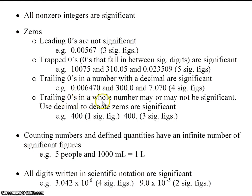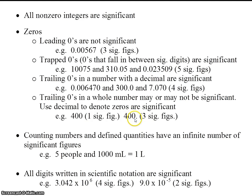Trailing zeros in a whole number may or may not be significant. Use a decimal place to denote zeros that are significant. This number, 400, has trailing zeros, but there is no decimal place, so these two trailing zeros are not significant. This is also a whole number, and it appears to be the same number — which it is — but this is precise to the ones place because we have a decimal place here. Look for the decimal place. These trailing zeros are not significant, so this number has 1 sig fig. These trailing zeros are significant because of the decimal place, so this number has 3 sig figs.